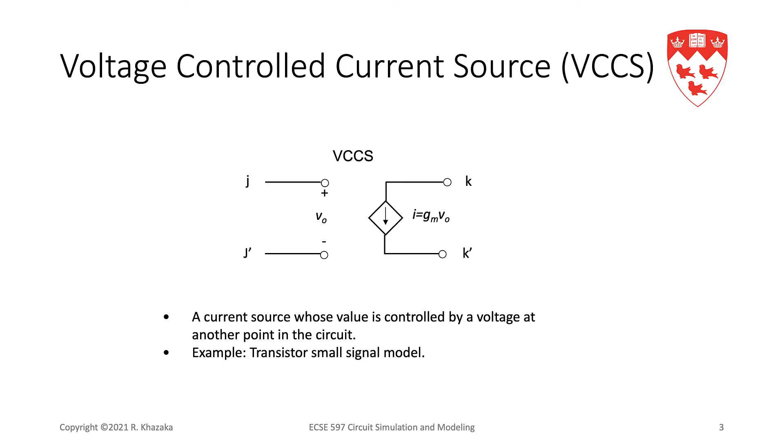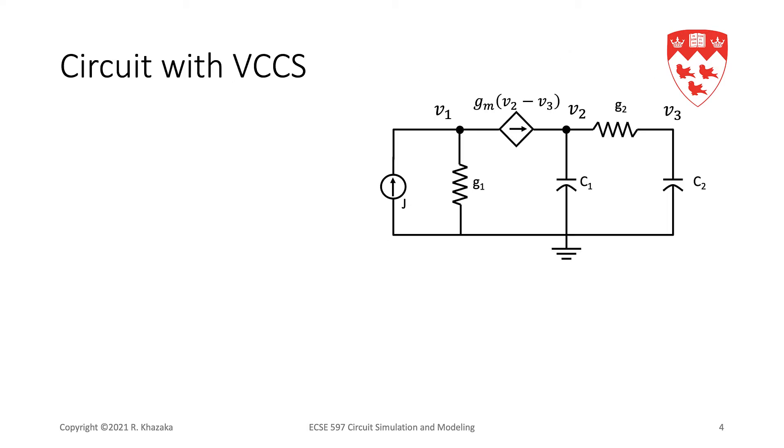So, let us start with an example. Let us consider this circuit containing a voltage-controlled current source. What we will do, as usual, we will write KCL equations at node 1, node 2, node 3, and we will hopefully be able to infer a stamp for this source. So, let us start with KCL at node 1.